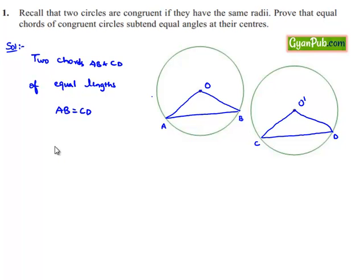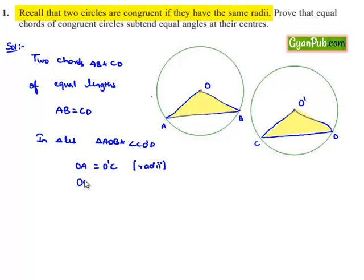In order to prove this, let us consider both triangles, that is triangle AOB and triangle CO'D. OA is equal to O'C since the figures are congruent, their radii will be equal, and OB is equal to O'D.